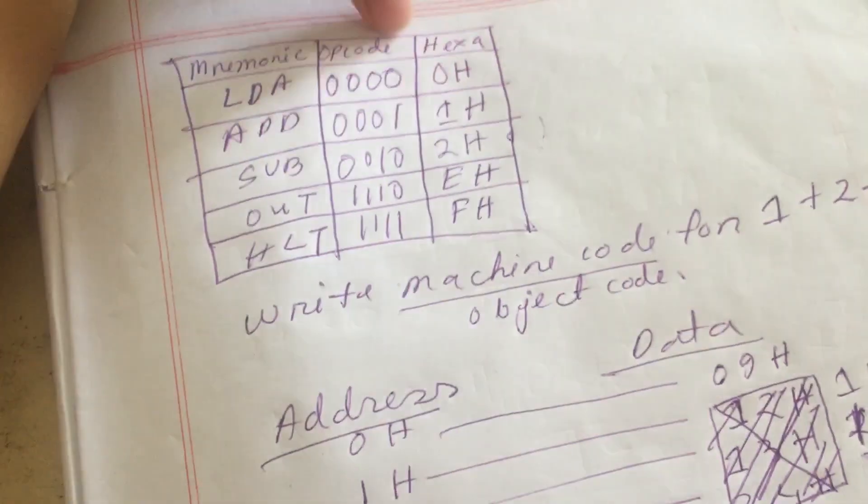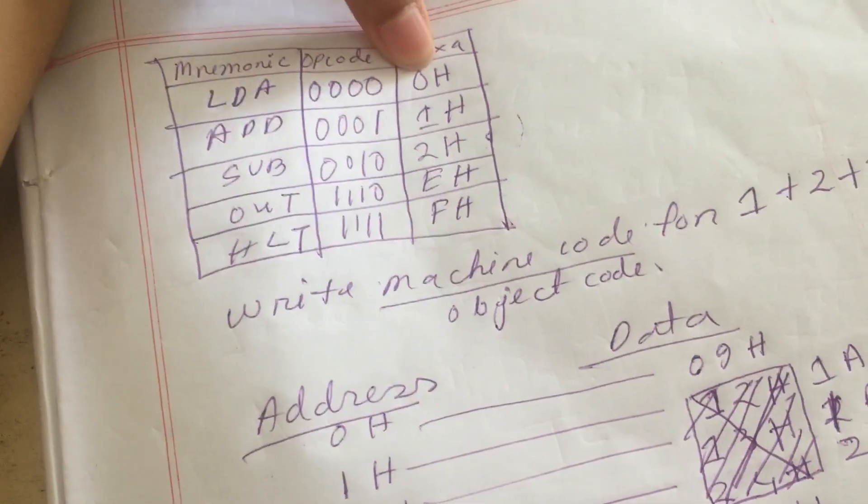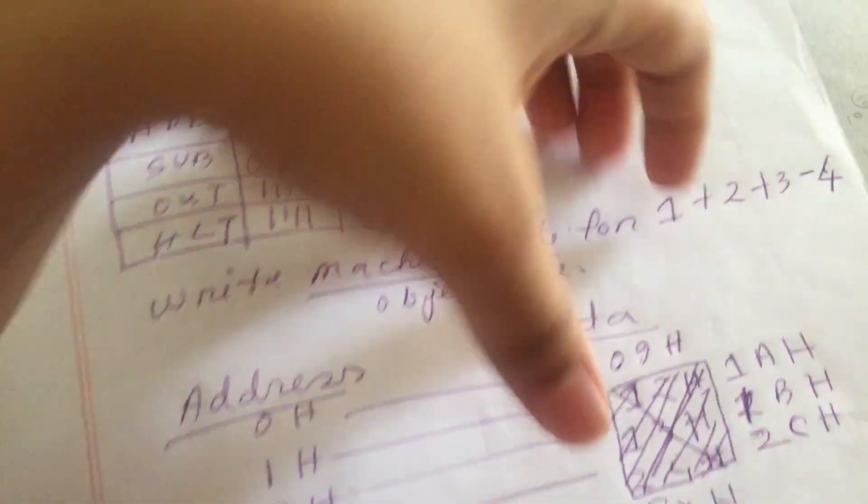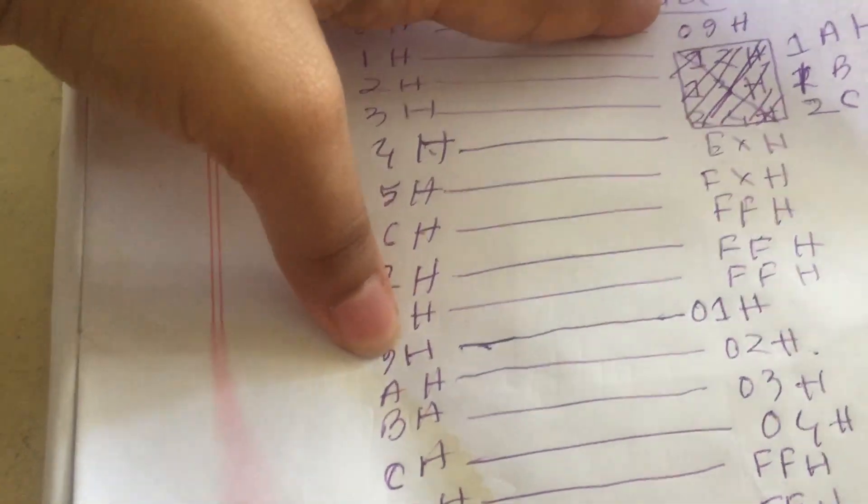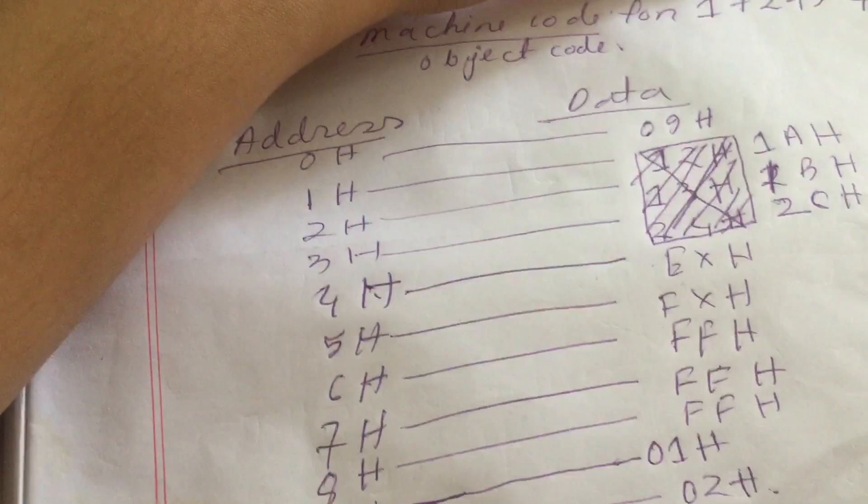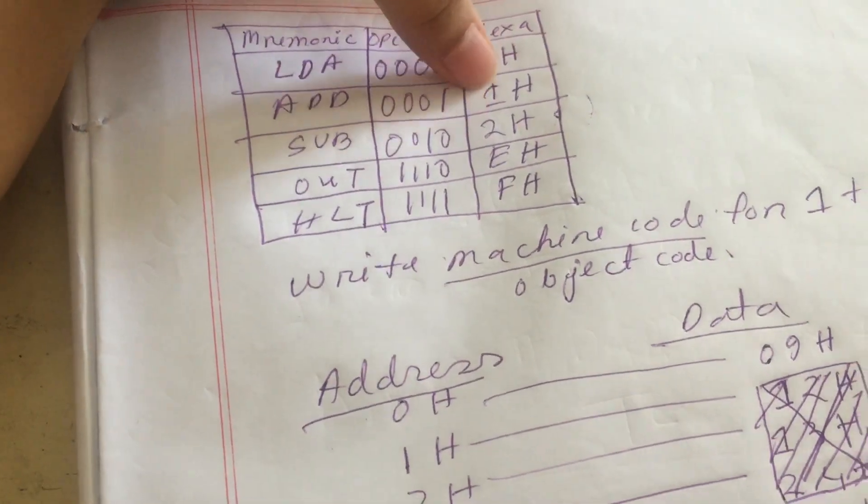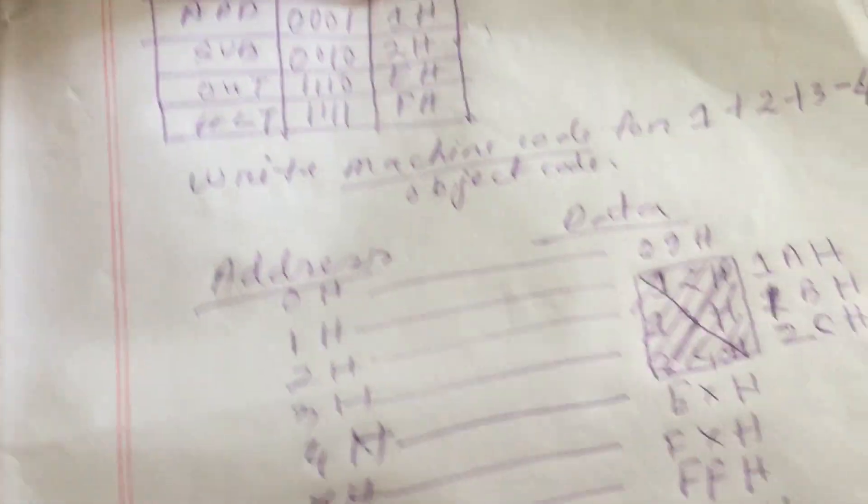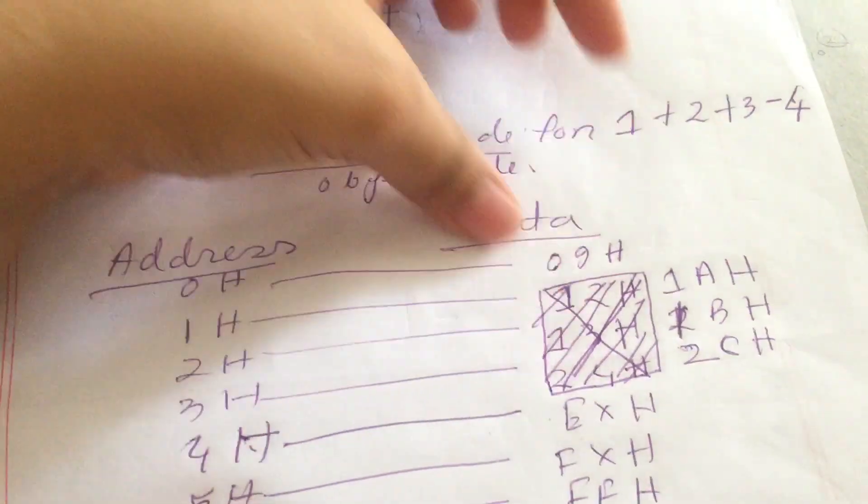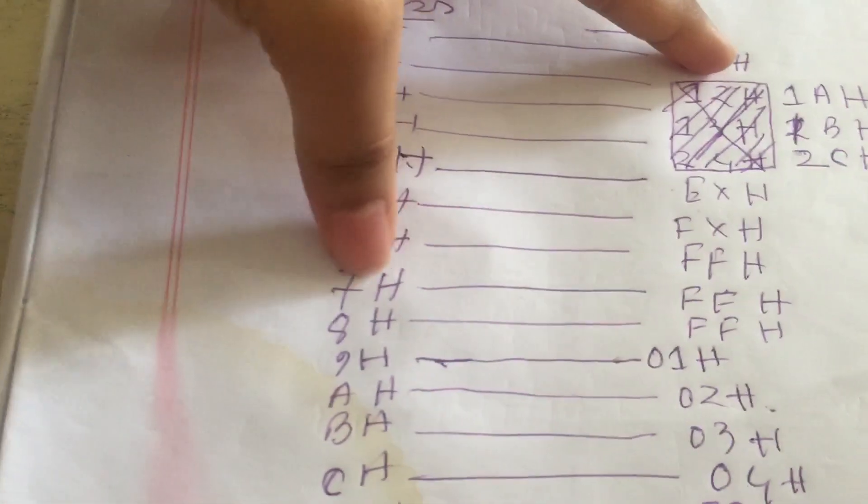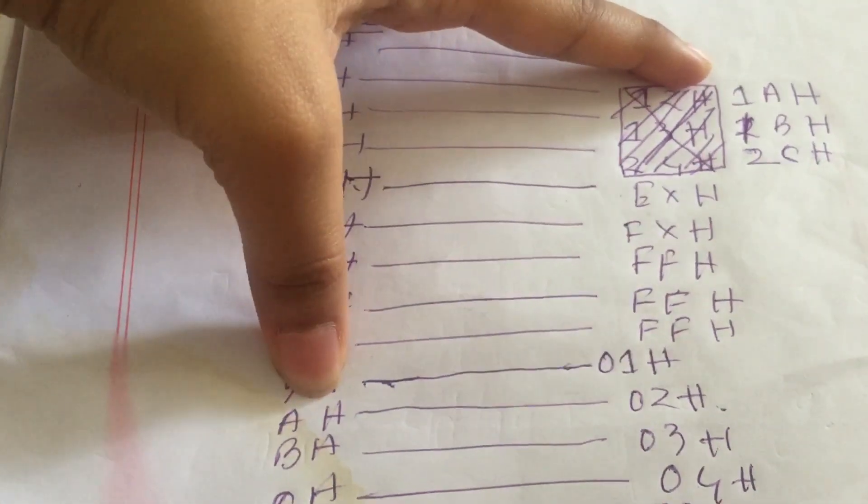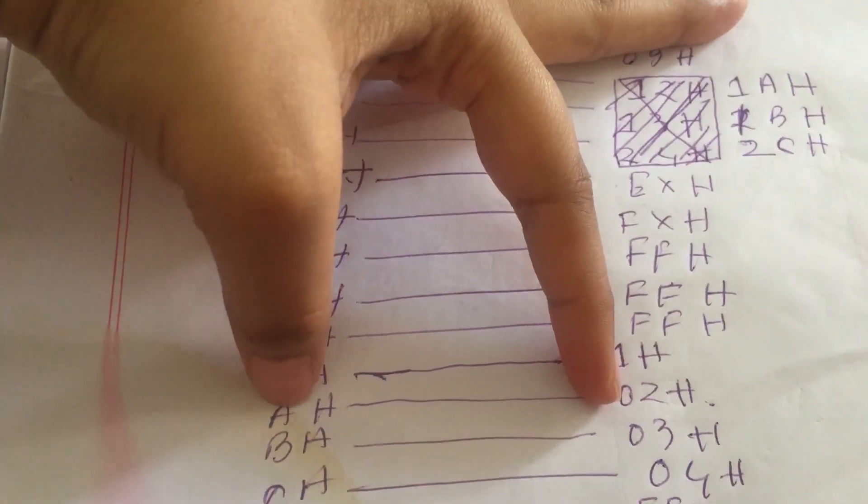H. Because load represents hexer 0H, so this 0 and 9 comes from here. So 09H. And this add represents hexer 1H. So our 2 was loaded in the AH.